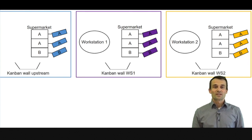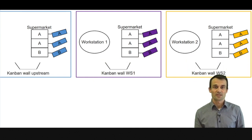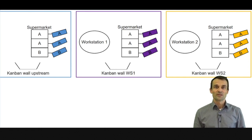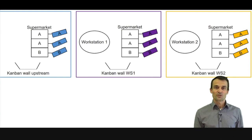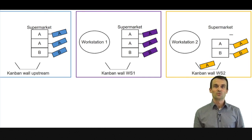Every workstation also has a Kanban wall. The way Kanban operates is illustrated here as follows. Let's assume we have a customer asking for product A. Then it takes one of the finished goods from the supermarket of workstation 2. When it takes that item, the card attached to it — that's called the Kanban card — is removed, and that Kanban card is then moved to the Kanban wall of workstation 2. Item A is sold to the customer and the Kanban card moves to the Kanban wall.